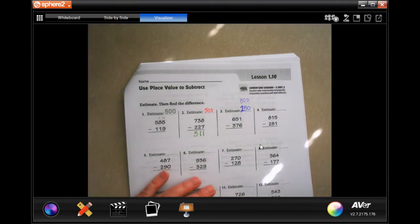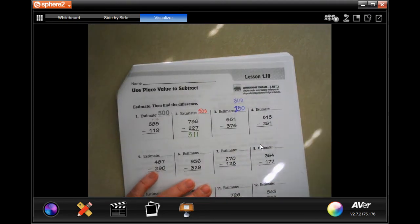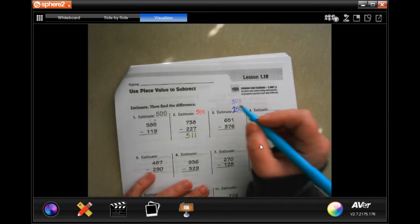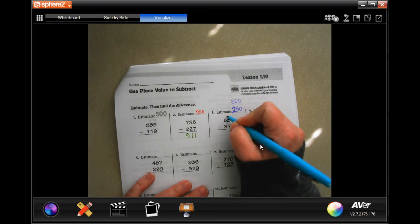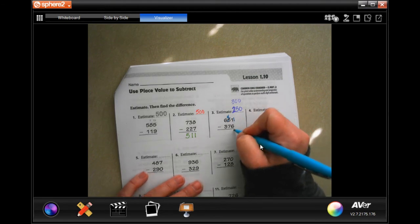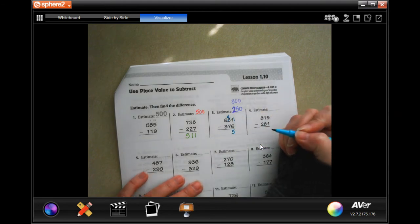And now we're going to go ahead and do the math. So 1 cannot take away 6. 1 is too small. We're going to go next door. We're going to borrow one, making that a 4. It also makes this an 11 instead of a 1. So 11 minus 6 is 5.